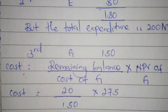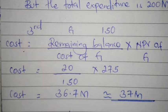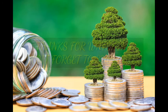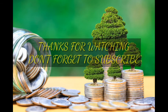To find the portion of G to take, we use the formula: remaining balance ÷ cost of G × NPV of G. The remaining balance is 20M (since 200M − 180M = 20M), the cost of G is 150M, and the NPV of G is 275M. So: 20/150 × 275 = 36.7M, approximately 37M. Therefore, we take only 37M from project G. The final combination is D + E + part of G, giving a total NPV of 470 million.